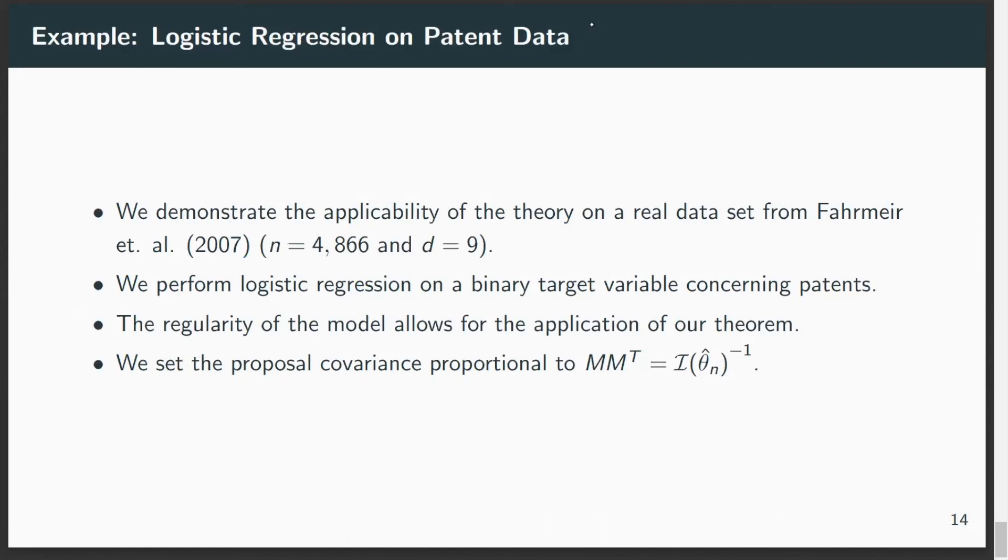And in order to demonstrate that what we present here corresponds to practical use cases, we also ran a logistic regression on patent data. Logistic regression is a very good example. It's very commonly used in practice, and the Bernstein-von Mises theorem is in many scenarios fulfilled. So we can just use that. And as we said earlier, we just try to match the posterior covariance. In this case, we do that by calculating the Fisher information, which is analytically available here, and evaluated at the MLE.